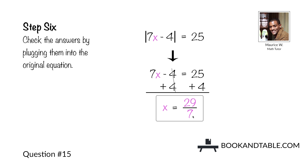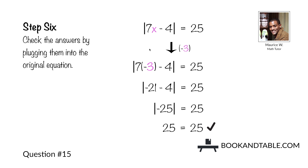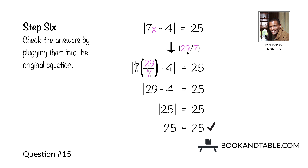Plug both answers back into the original equation. For x equals negative 3: 7 times negative 3 is negative 21, negative 21 minus 4 is negative 25, and the absolute value of negative 25 is 25 — so x equals negative 3 is correct. For x equals 29/7: the 7s cancel, leaving 29 minus 4, which is 25, and the absolute value of 25 is 25 — so x equals 29/7 is also a correct answer.